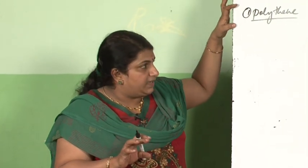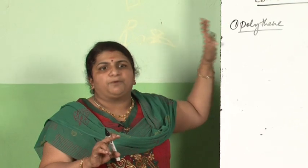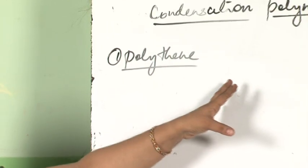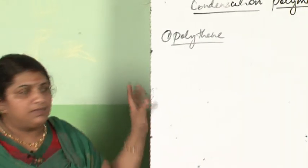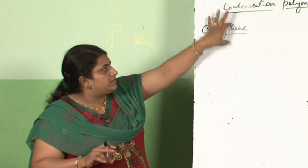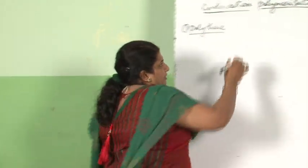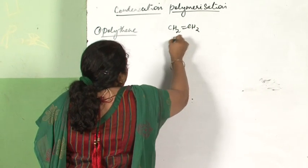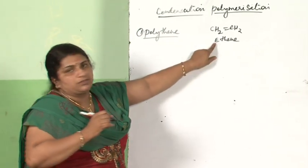The most important question normally asked is about the monomers of various polymers. For example, for polythene, you must give the structure and name of the monomer. As you know, the name of the monomer is ethene, with structure CH2=CH2.